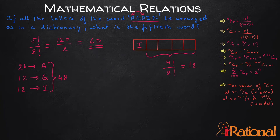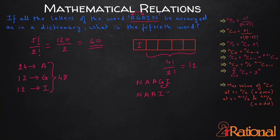So we have 24 words starting with A, 12 starting with G, and 12 starting with I, giving a cumulative total of 48. Our 50th word is clearly going to begin with N. It will be the second word formed with N as the beginning letter. So the first N-word is N-A-A-G-I (word 49), and rearranging gives N-A-A-I-G as the 50th word.